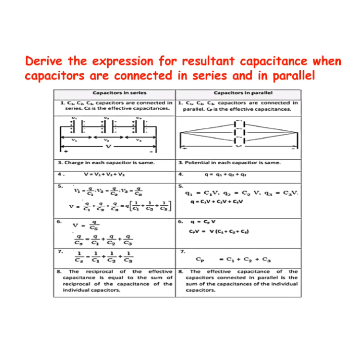Let us discuss some day-to-day life experiences. An example of a series circuit is a string of Christmas lights — if any one of the bulbs is missing or burned out, no current will flow and none of the lights will go on. For parallel circuits, an example is the smaller blood vessels that branch off from an artery and then connect to a vein to return blood to the heart.